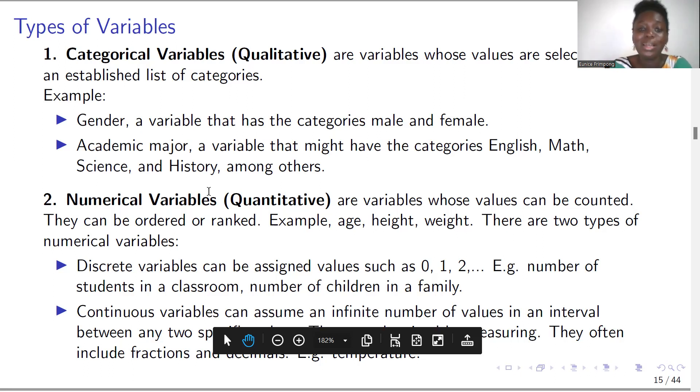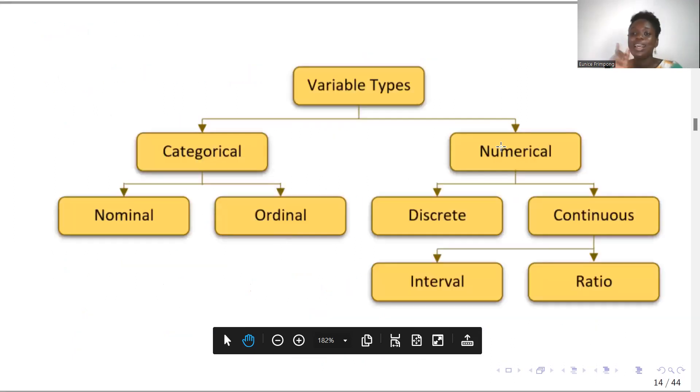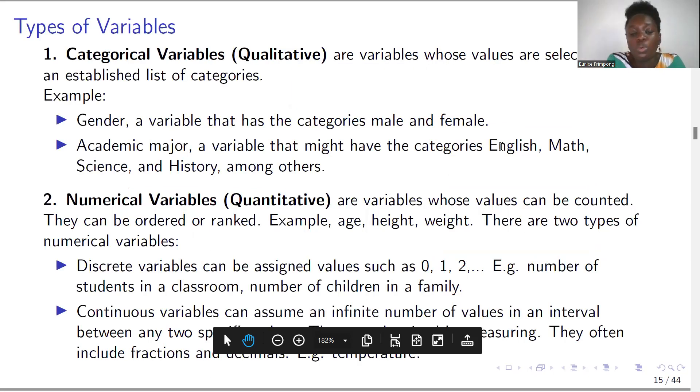Now, if you come to quantitative variables or numerical variables, these are the variables that assume numerals, they assume numbers. So for example, weight: if you stand on your weight scale and you weigh 60 kg, a number has been assigned to that variable. So it's a numerical variable or a quantitative variable. If you look at age, someone may be 50 years old, someone may be 30 years old, and a number has been assigned to that variable. So we also describe such variables as numerical variables.